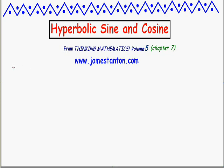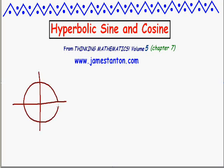Mathematicians don't like to make hard work for themselves. They're going to work with the simplest circle they can think of, namely a circle centered at the origin. Here it is. And the simplest radius to choose would be 1. So this is an equation of the form x-squared plus y-squared equals 1 — a circle, centered at the origin, radius 1.